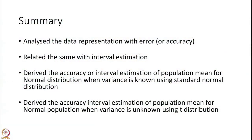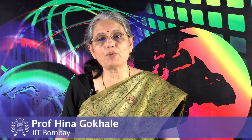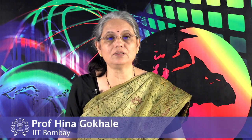To summarize: we analyzed data representation with error and found it is the same as statistical interval estimation. We derived the interval estimation of population mean for a normal distribution when variance is known, using the standard normal distribution. We also derived the interval estimation of population mean for a normal distribution when variance is unknown, using the t-distribution. Thank you.